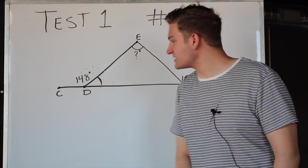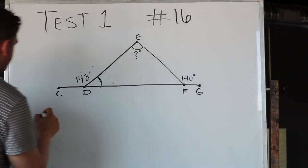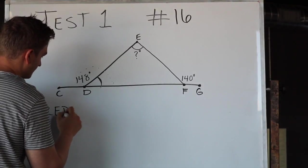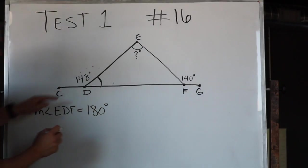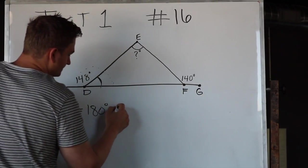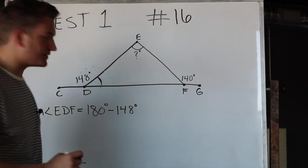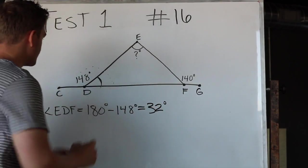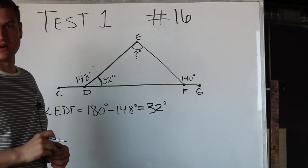So to find the measure of angle EDF, it equals 180 degrees minus this chunk, 148. When we do 180 minus 148, you can do this in your calculator, you get 32. So this little angle right here is 32 degrees.